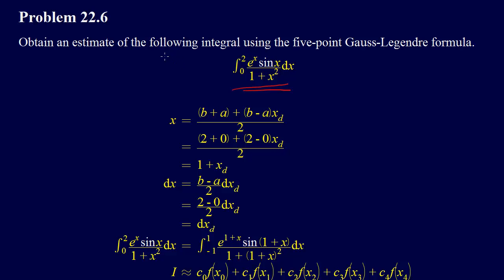This is problem 22.6 from the book. It asks us to obtain an estimate of the following integral using the five-point Gauss-Legendre formula. The integral is going from zero to two of e to the x times sine of x dx over one plus x squared.